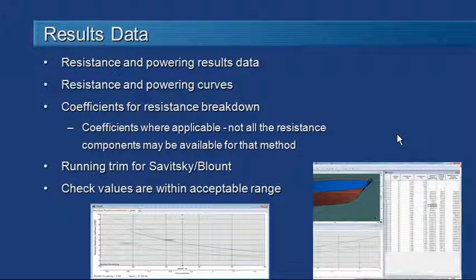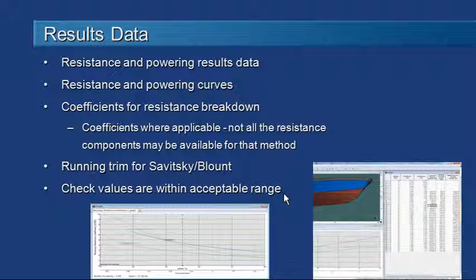To review the results of our resistance calculations for the regression methods, we can review the resistance and powering results in the data table or the results table, and we can also review the series of curves. Those curves include not just resistance and power, but the individual components of resistance presented in non-dimensional coefficient form, so it's a good idea to review those coefficients and see how they're varying. For one of the planing methods there's also a graph of the running trim, to see how the trim of the vessel varies through the different stages of the planing regime. You should review all of these results and make sure the values are within an acceptable range.